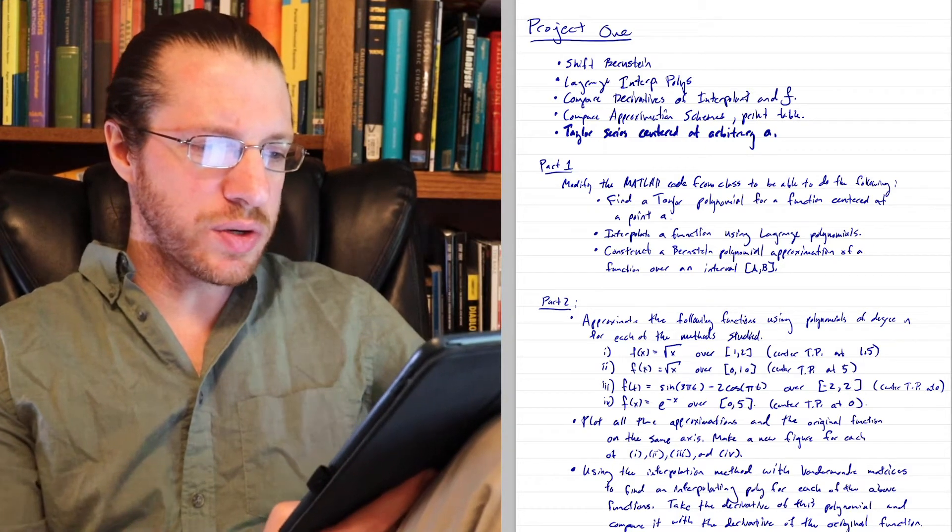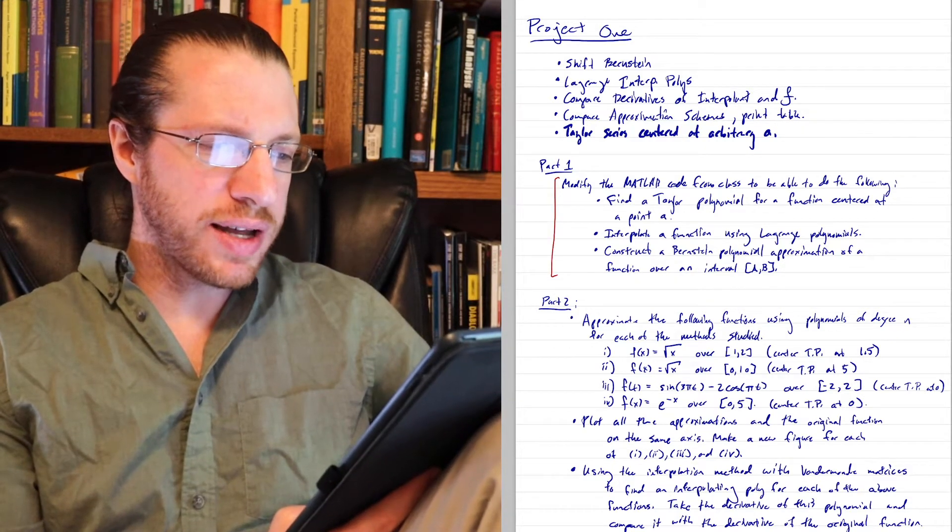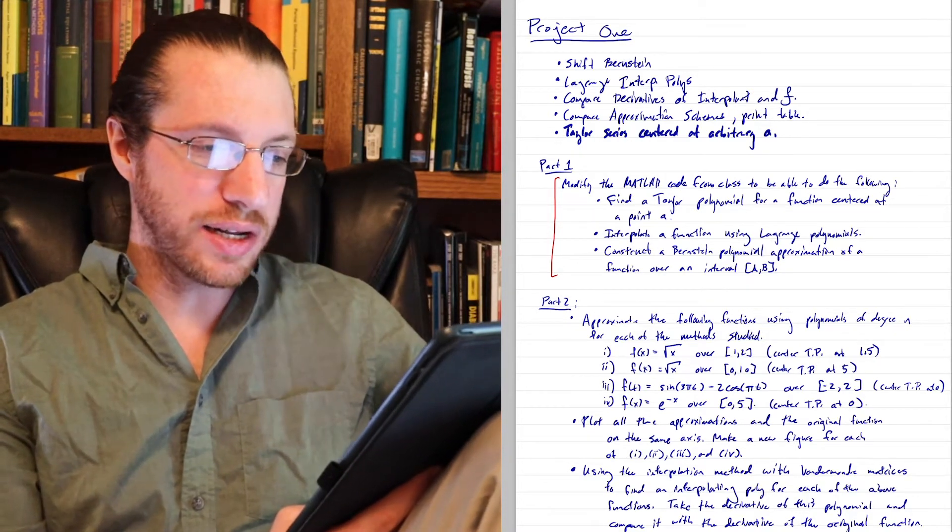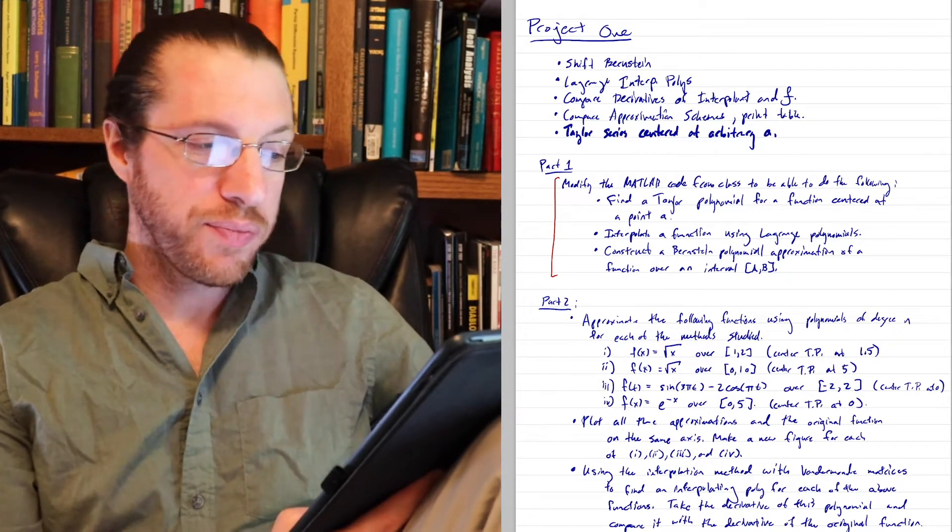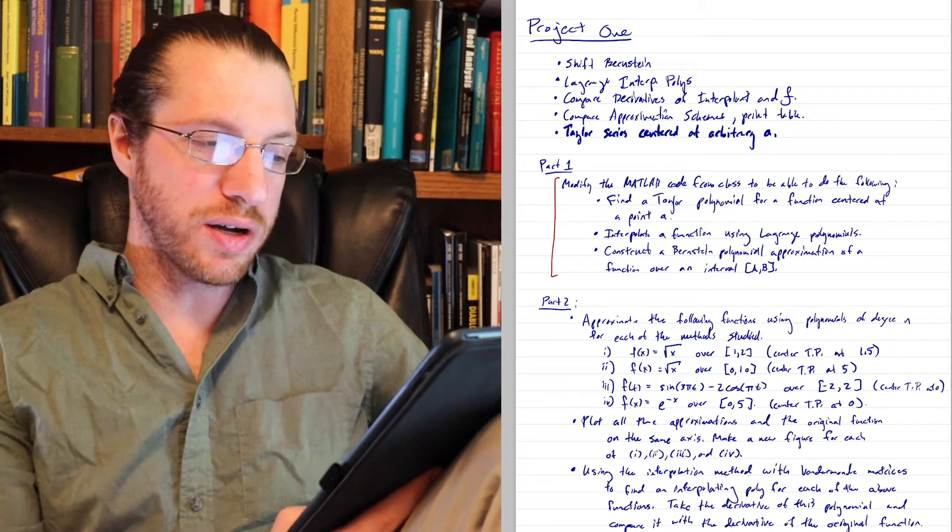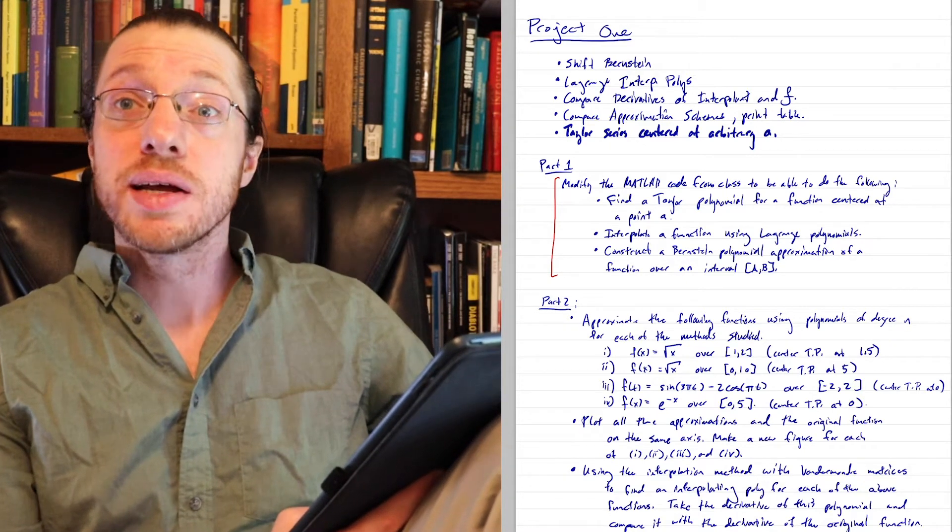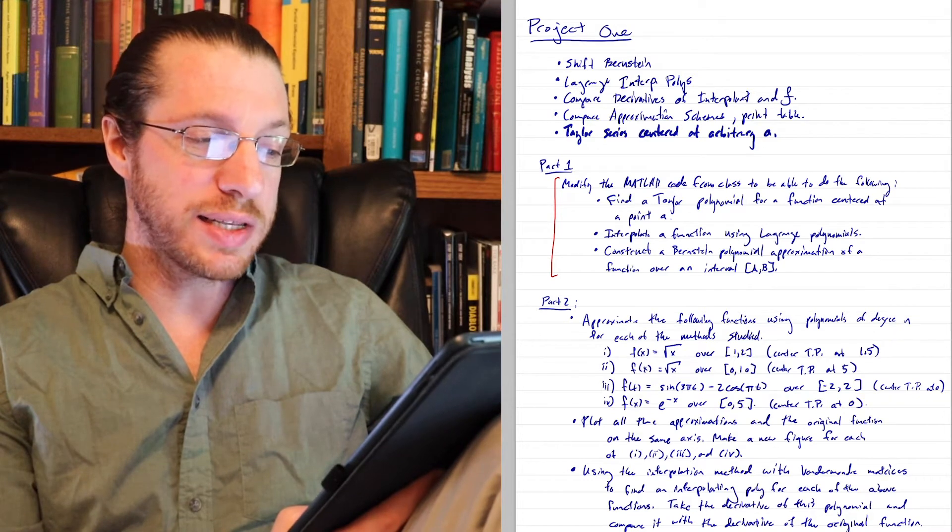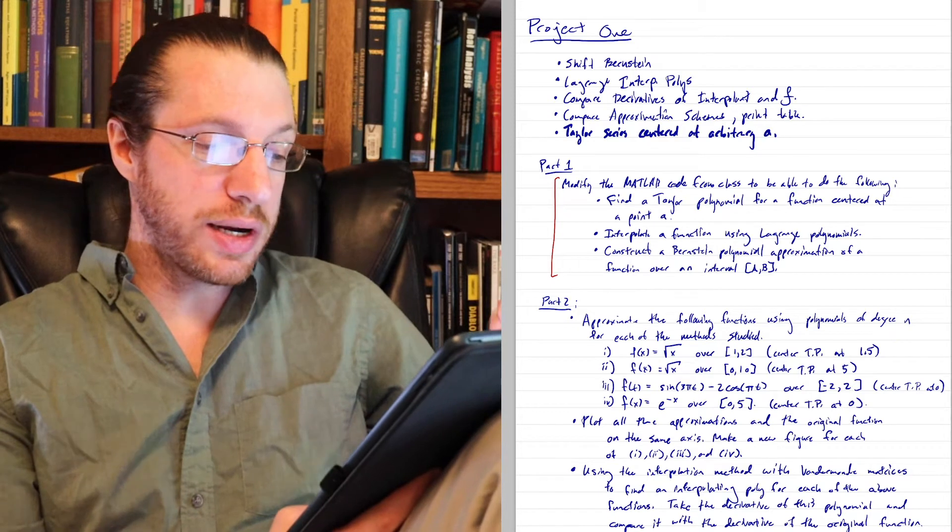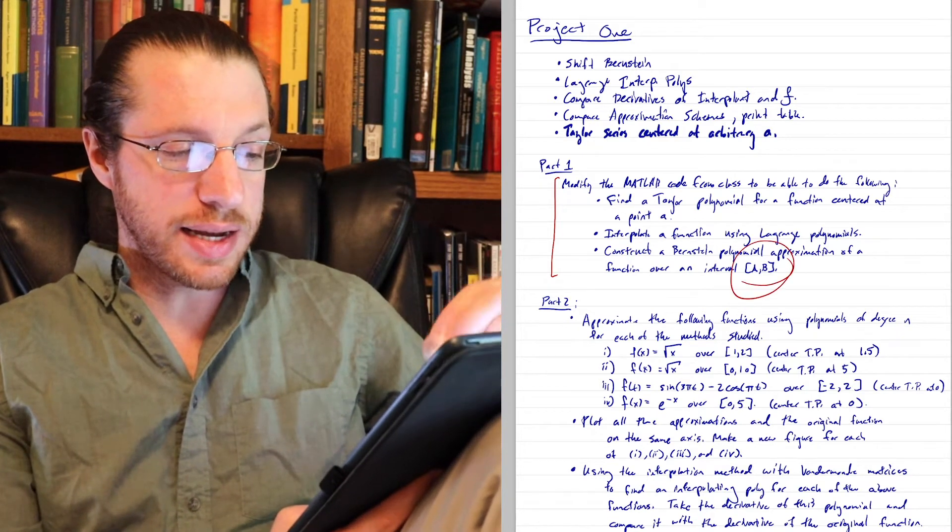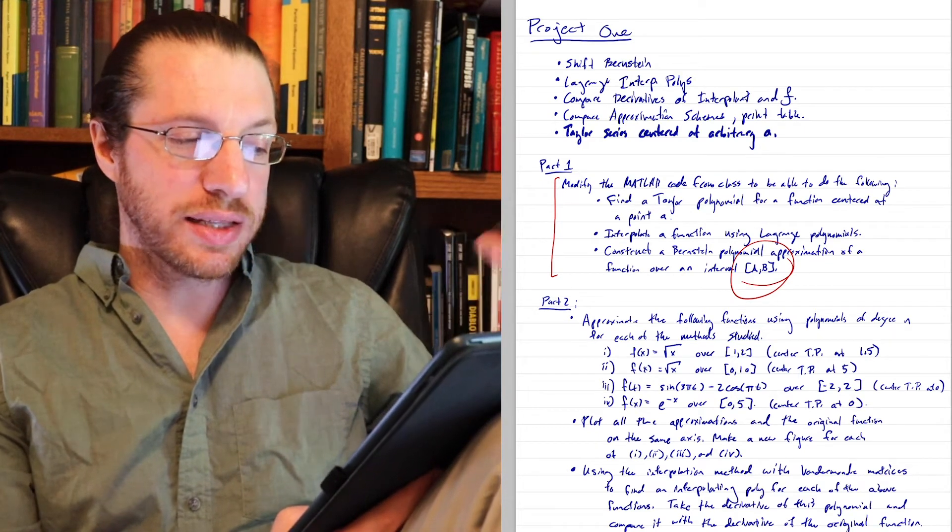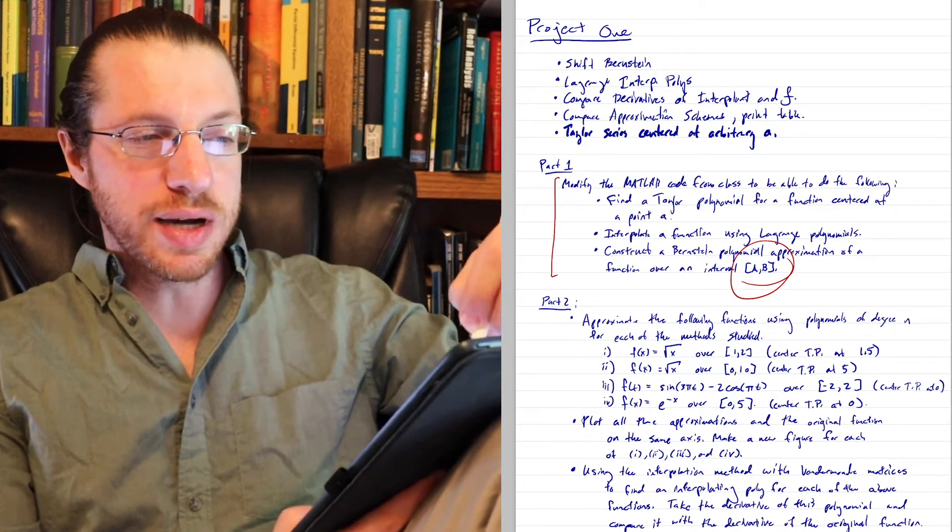But okay, so what are the things that we need to do? And so basically, here I say in part one, modify the MATLAB code from class to be able to do the following: find a Taylor polynomial over a function centered at point A, interpolate a function using Lagrange polynomials, and construct a Bernstein polynomial approximation of a function over an interval A, B. So these are the first three things that you need to do. You should take some input A, B and be able to do it. And so you should make these each like their own kind of file if you want, so .m file for each of these.